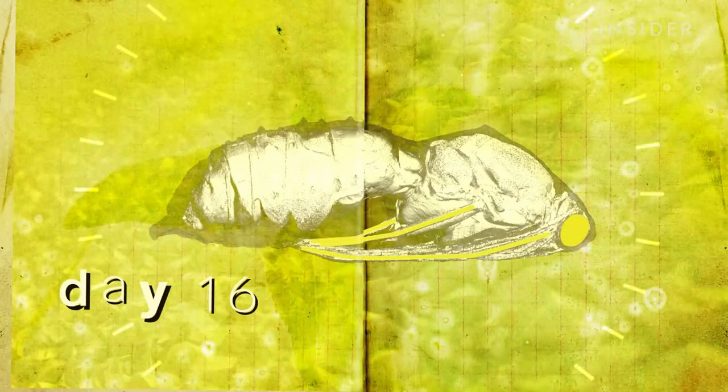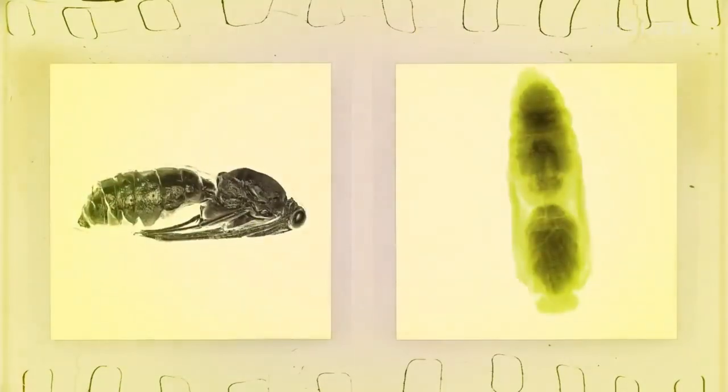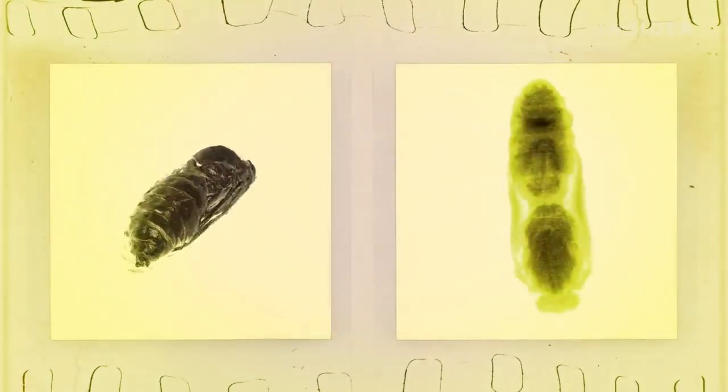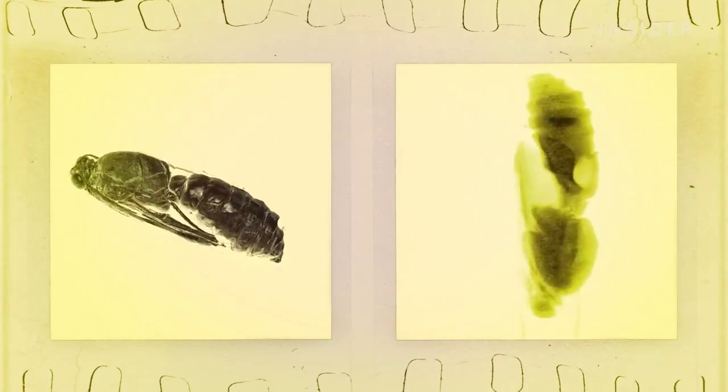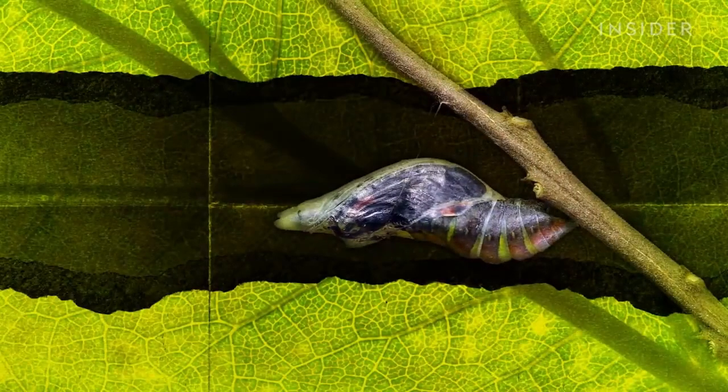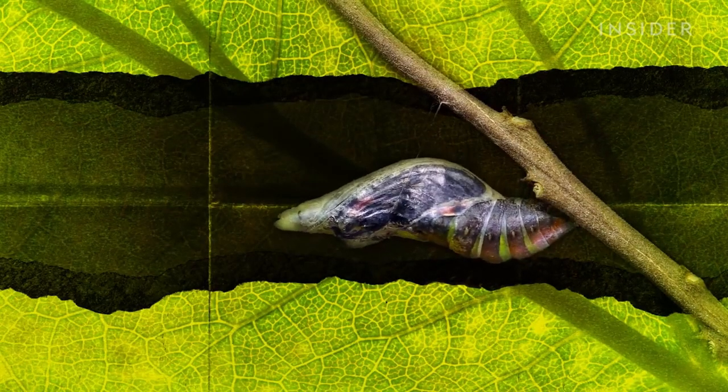Now, two weeks is a remarkably short time for all of this to happen, since each imaginal disc starts out with only about 50 cells and must multiply those into thousands, just to form a single wing. And if you checked out the chrysalis around day 16, you might even be able to see those brilliantly colored wings. Because for some species, their chrysalis turns transparent in their final days of metamorphosis.